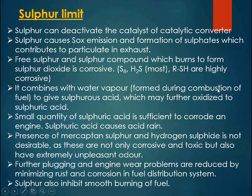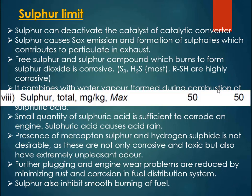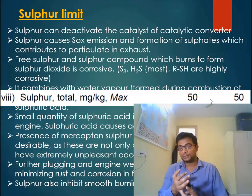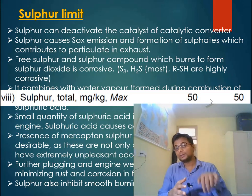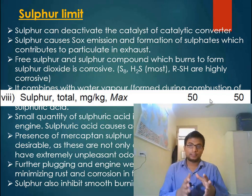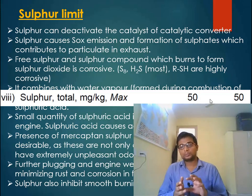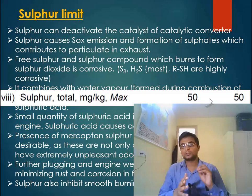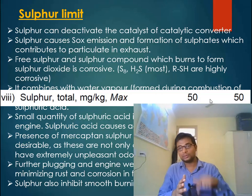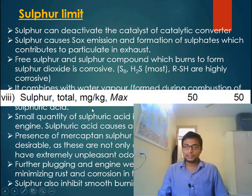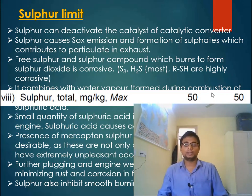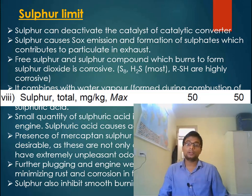Because of all these problems, there should be a limit on sulfur for petrol. Currently, the maximum allowable limit is 50 ppm. Earlier, in BS3, it was 150 ppm. In BS6, it will be further reduced to 10 ppm. Other pollutants may be reduced through catalytic converters, but for sulfur there is no other way — we have to reduce it in the fuel itself. That's why there is a limitation: 50 ppm up to 2020, and after 2020, when BS6 is implemented, this limitation will be further tightened to 10 ppm.